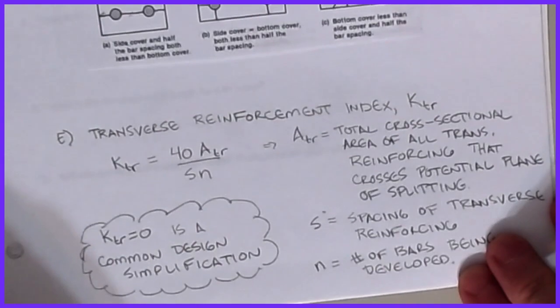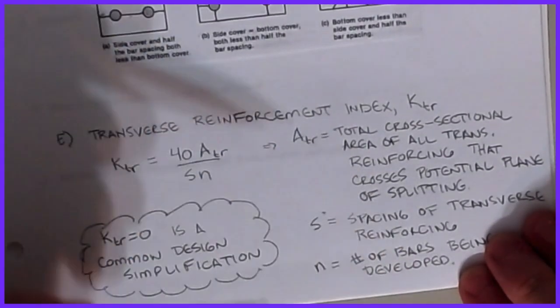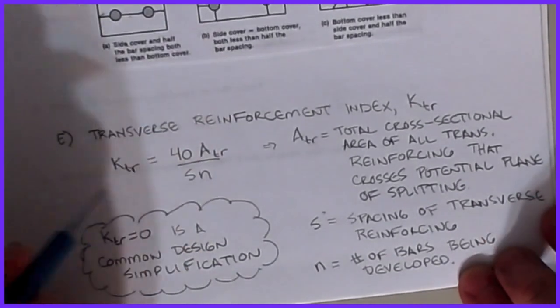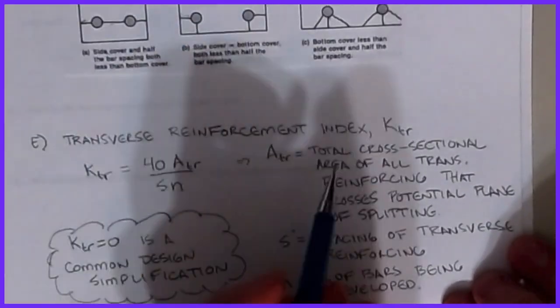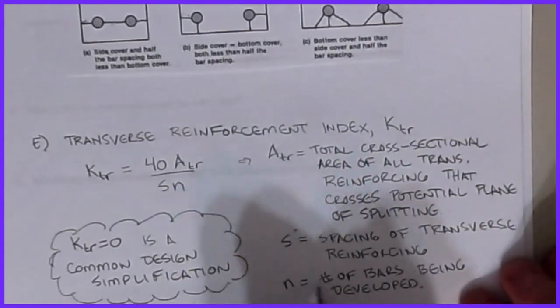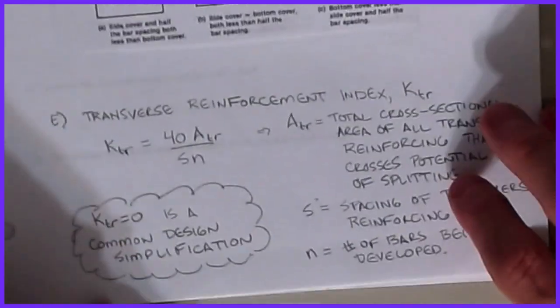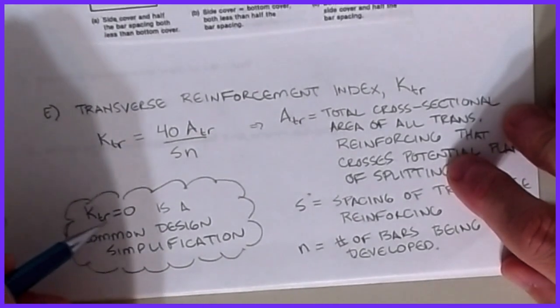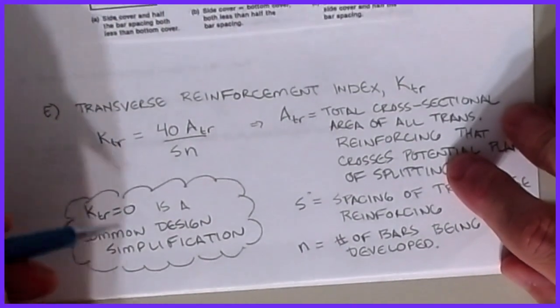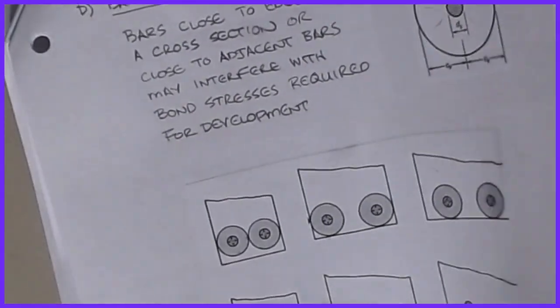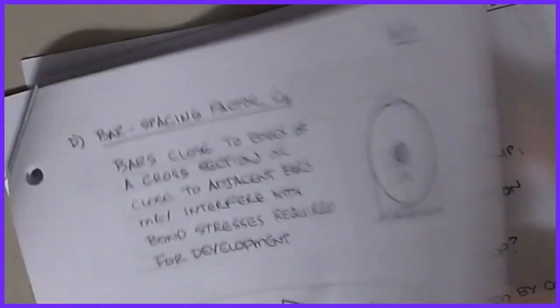The transverse reinforcement index Ktr accounts for any steel perpendicular to the bar being developed that provides lateral restraint. Ktr = 40 × Atr / (s × n), where Atr is the total cross-sectional area of transverse reinforcement crossing the potential plane of splitting, s is the spacing of transverse reinforcement, and n is the number of bars being developed. ACI allows you to conservatively take Ktr = 0 as a common design simplification — which is how the simplified table formulas are derived.